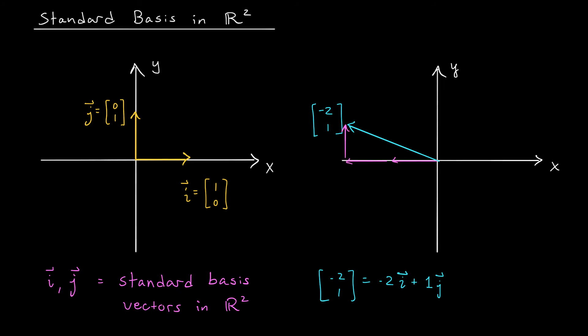Now, there's nothing special about the vector minus 2, 1. In general, the vector AB can be written as A times I plus B times J. This gives us a new way to represent vectors in R2.